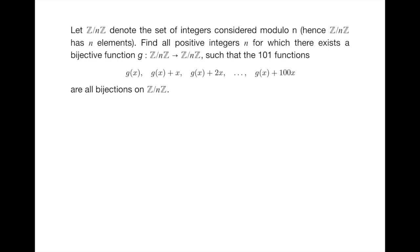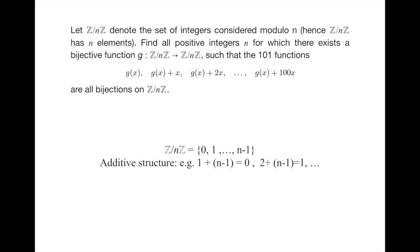We denote Z/nZ the set of integers considered modulo n. This set has n elements. We can represent it by 0, 1, until n-1. Moreover, it has an additive structure, so by adding 1 to n-1, we get 0, because everything is modulo n.